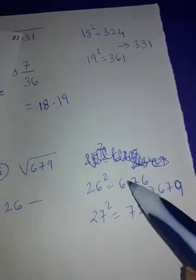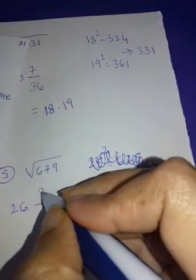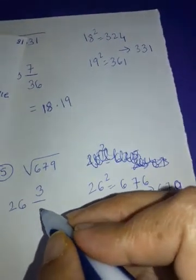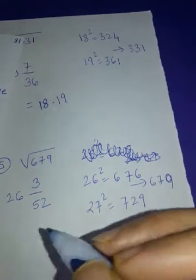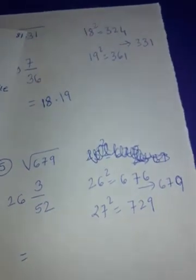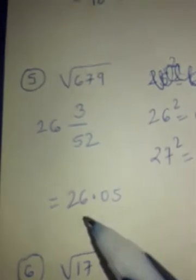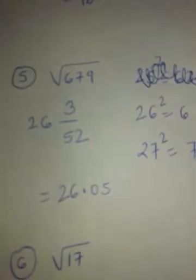What will be the numerator? Difference between them. That is 3. And double of 26. That is 52. Let's convert and let me know the answer. This 26.05.